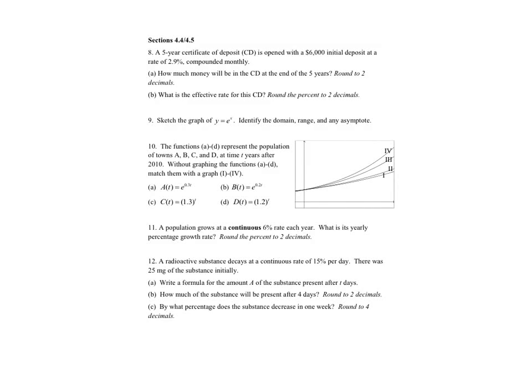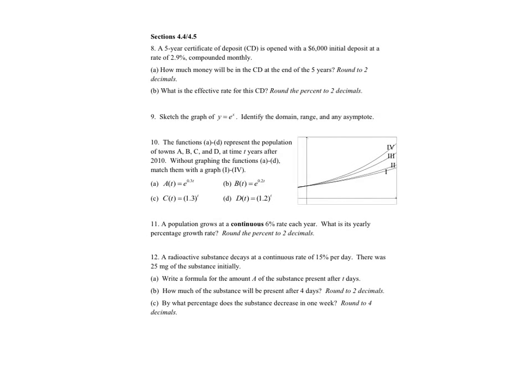So this one says how much money will be in the CD at the end of five years. The first thing we want to do is set up our formula here. So we can do P equals P naught times 1 plus the APR divided by the number of times that is compounded, to the number of times times the number of years. And so we'll have P equals our initial amount 6,000, then we'll have one plus my rate is 2.9% so 0.029, but I'm dividing that by 12 because I'm doing that monthly, to the 12 times T and T is 5.